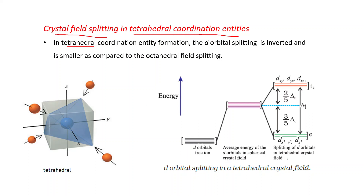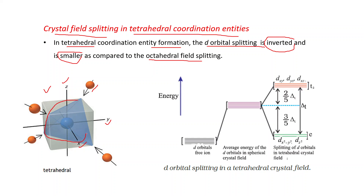In tetrahedral coordination entity formation, the d-orbital splitting is inverted and smaller compared to the octahedral field splitting. In this diagram you can see that ligands are approaching in between the axes — x, y, and z axes — and this is a tetrahedron with ligands approaching in between the axes to form tetrahedral geometry.